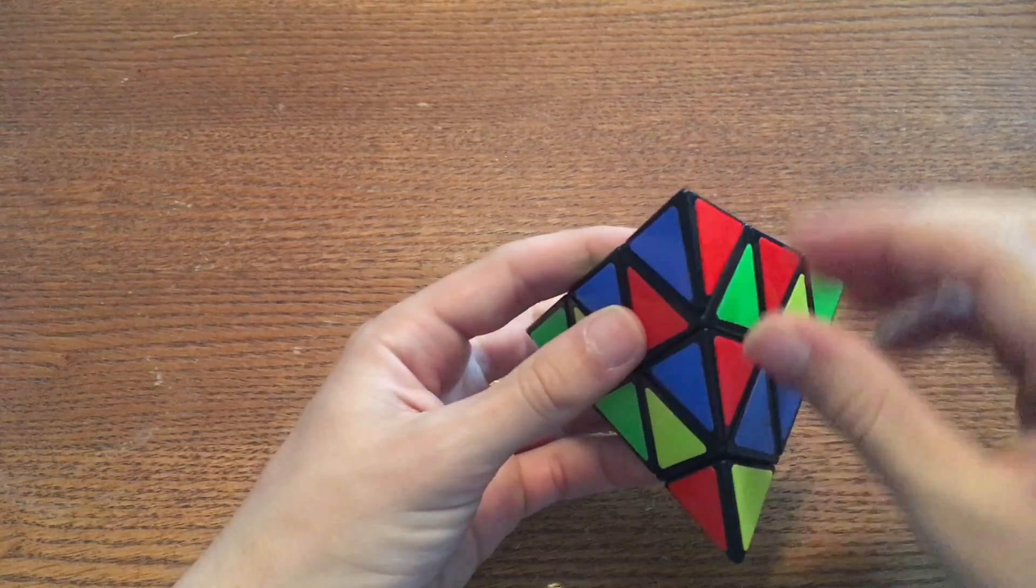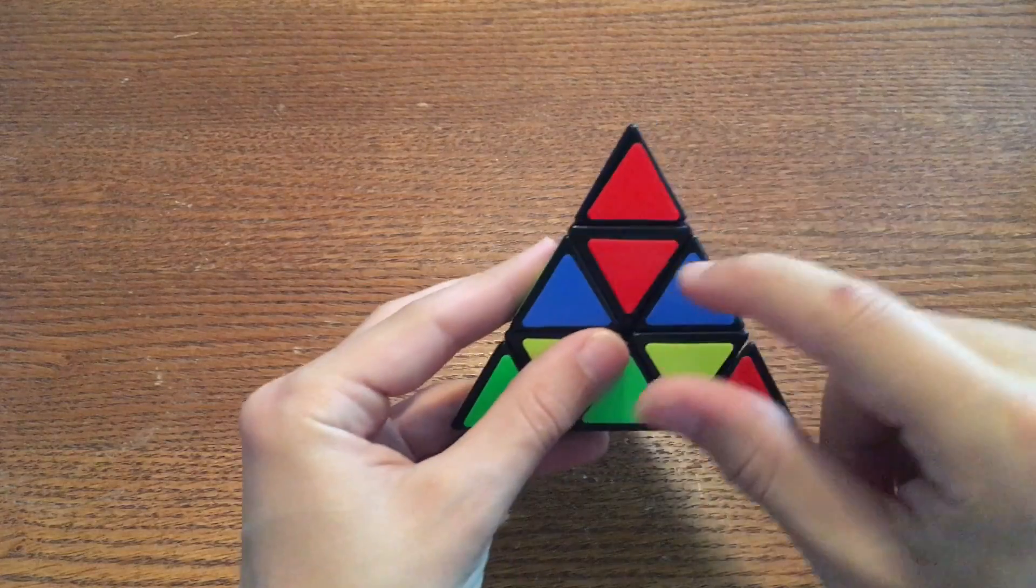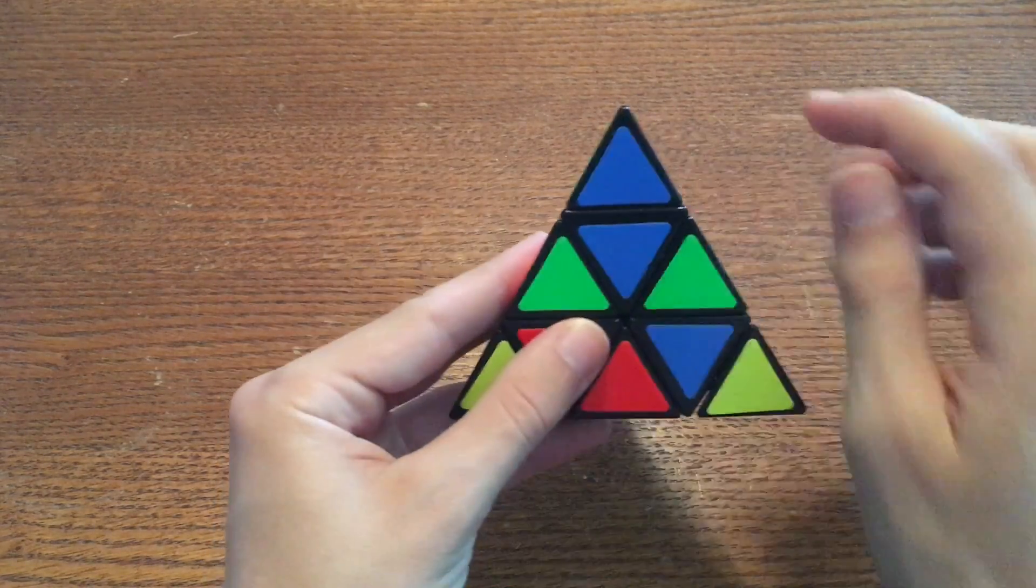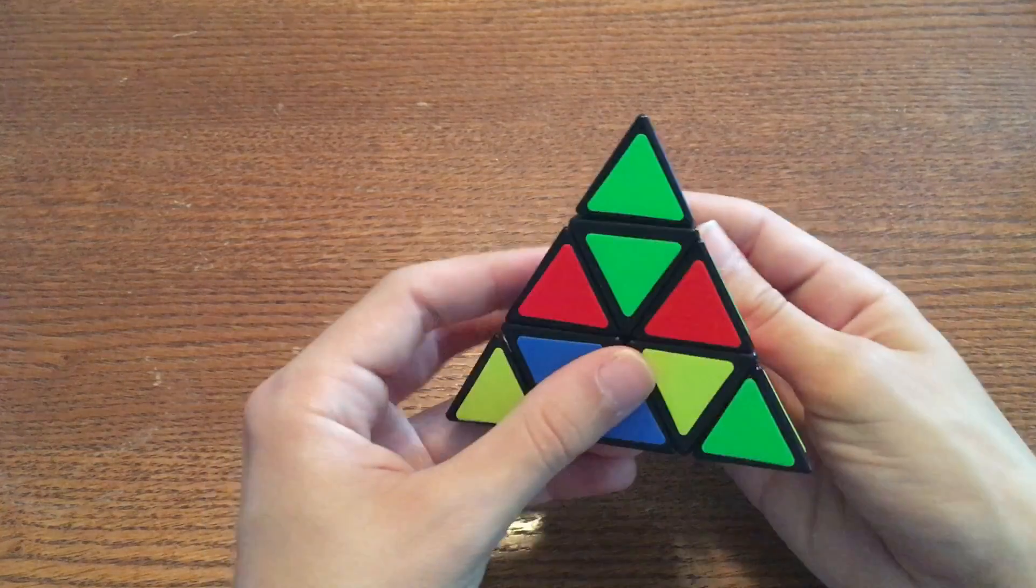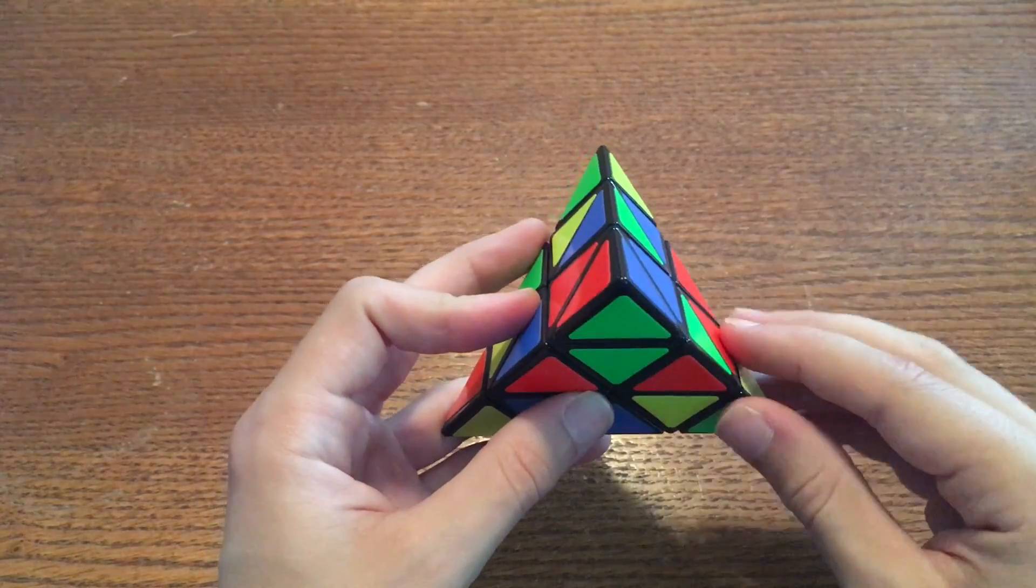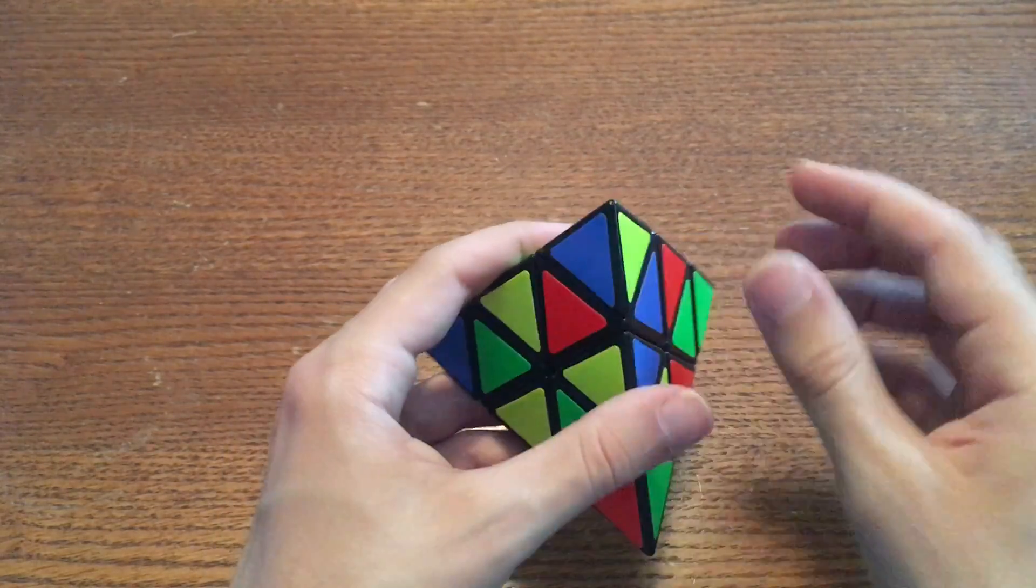For example when I turn this corner like this the red sticker matches up with the red center below it. Blue matches up with blue and green matches up with green. Therefore this corner is solved. So do that for all four corners.